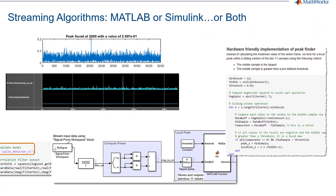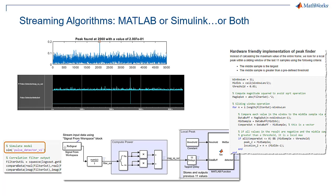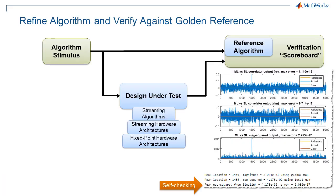Because this is constantly streaming, it outputs a pulse to signify that this middle sample coming out is the identified peak. Now from a verification standpoint, we have partitioned the design from the stimulus and analysis. This will allow us to swap in any of the versions of the refined design and still compare against the golden reference algorithm. The verification engineers typically call this functionality a scoreboard.